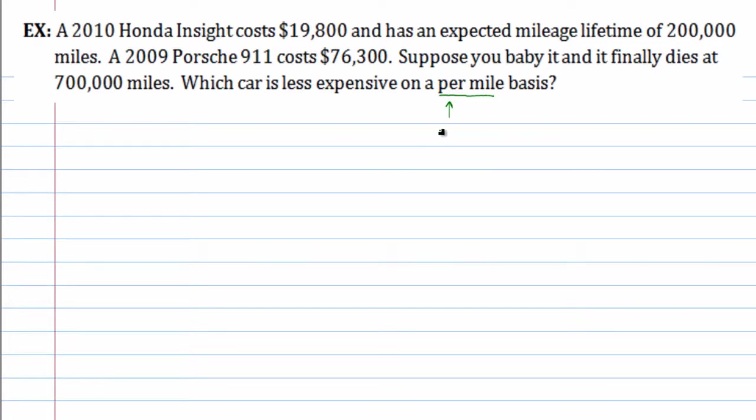Per is sort of a way of saying dividing by, so per mile means dividing by the number of miles. So we want to talk about dollars per mile here. So we have two objects. I'll go ahead and write them down. We have the 2010 Honda Insight, and we also have the 2009, an older model, Porsche.